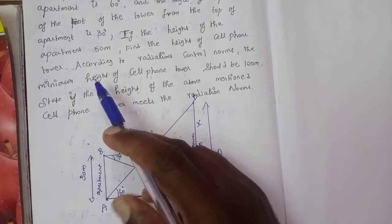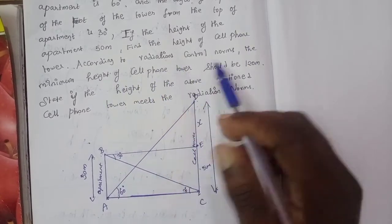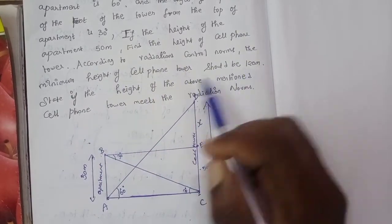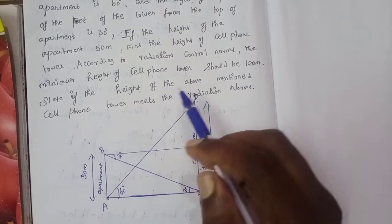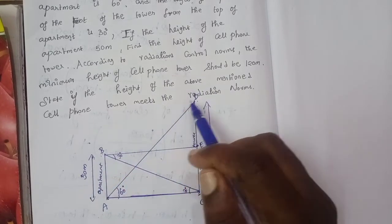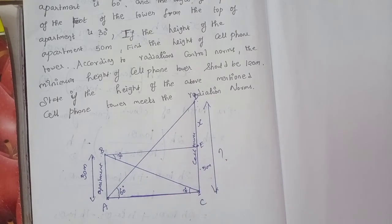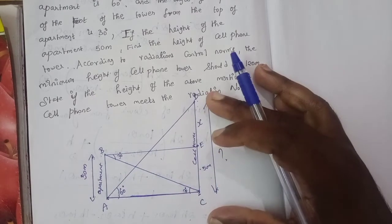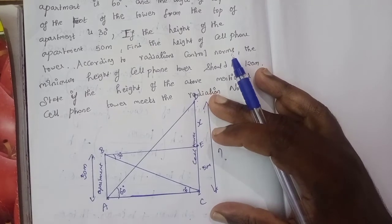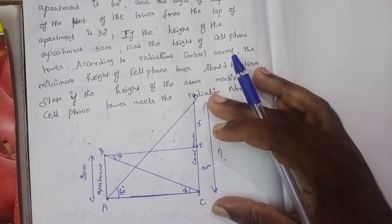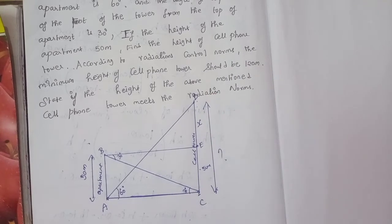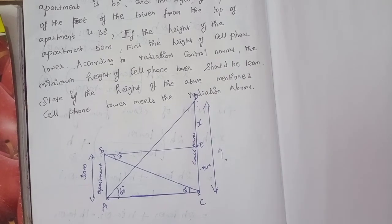The tower is the height. According to radiation controlled norms, the minimum height of the cell phone tower should be 120 meters. So 120 meters is the most important minimum requirement for cell phone signals.